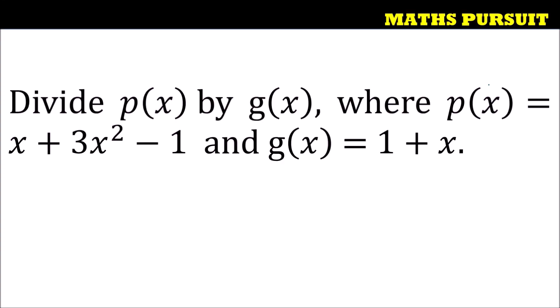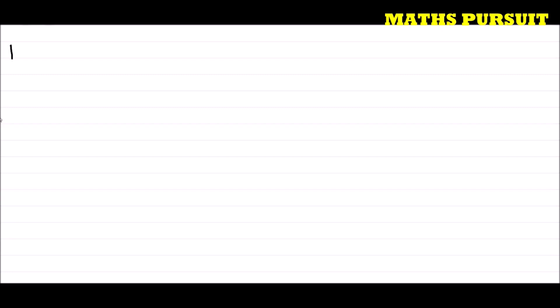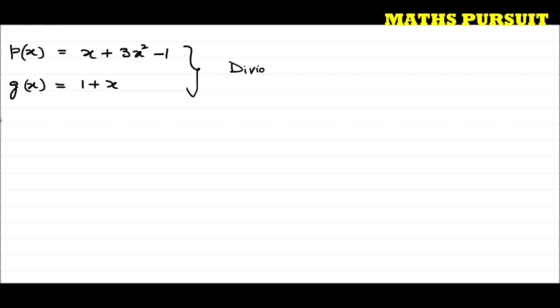The given question is: divide P(x) by G(x), where P(x) is equal to x plus 3x² minus 1, and G(x) is equal to 1 plus x. The question has given us these two polynomials and is asking us to divide P(x) by G(x).